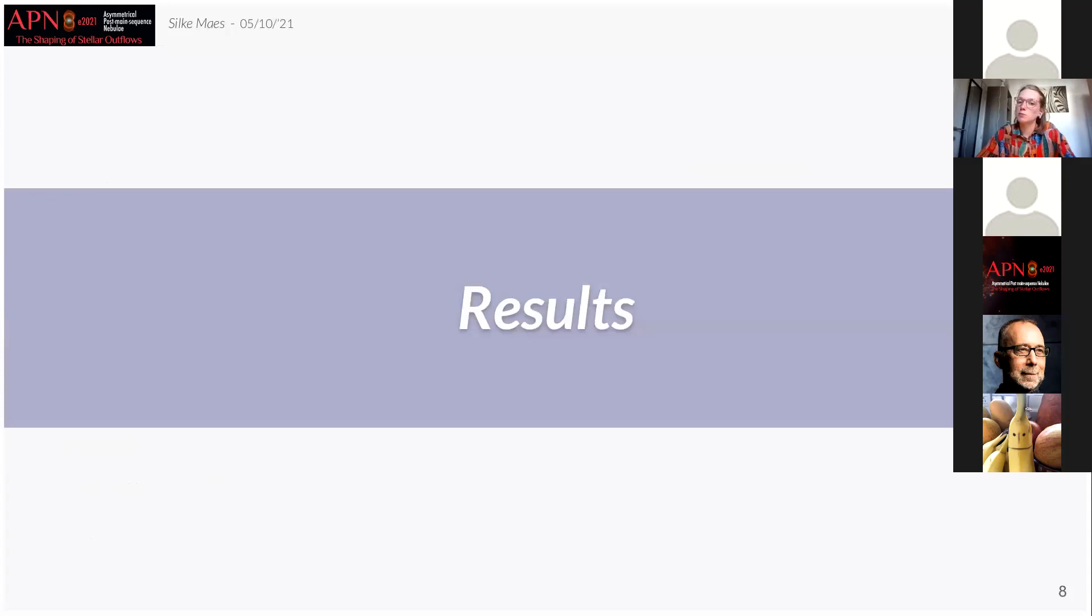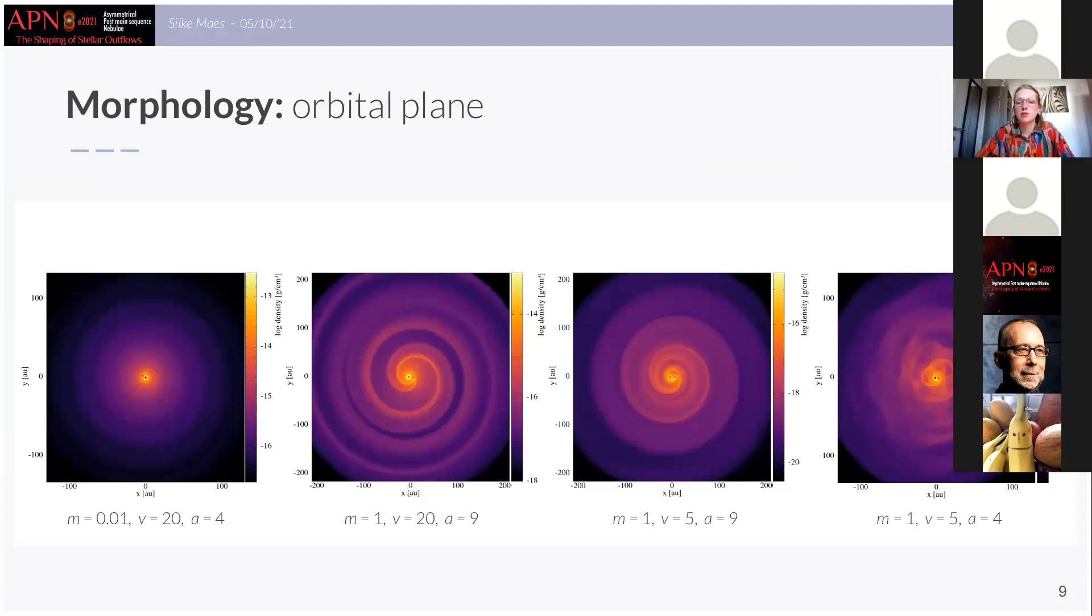Now let's move on to the results. So in this slide I show you the four main morphologies that we have found in our simulations shown in the orbital plane and as you can see these are generally spiral patterns as we expect. When the companion is of planetary type, here on the left side, we find a quasi-spherical outflow with only a minor density contrast spiral. When the companion is more massive and in a fast wind this results in a distinct single spiral structure as you can see here.